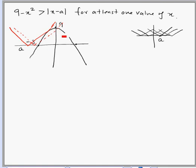We have the parabola above the mod graph for these negative values of x, so we have at least one negative value of x where the parabola is above the mod graph. This value of a is a possible value, and we mark this as the starting value, a_i.